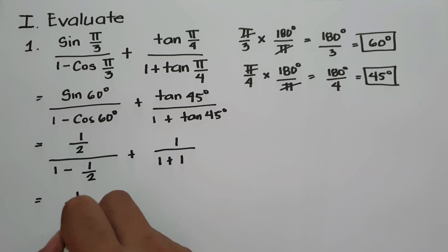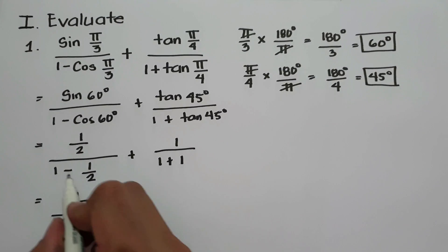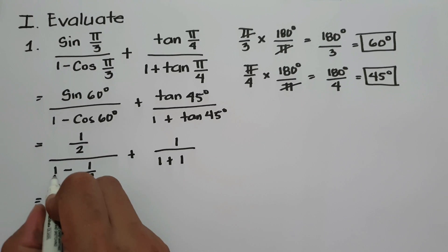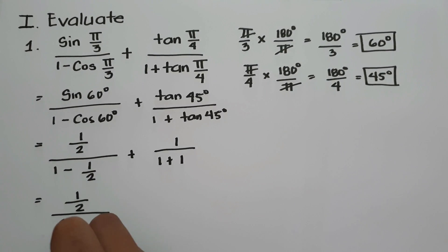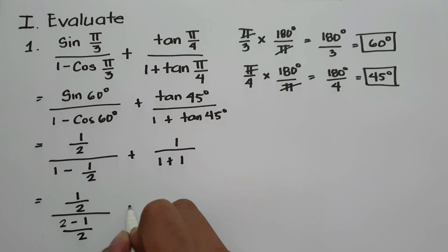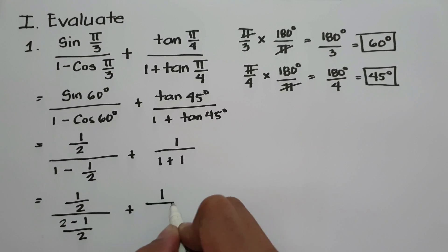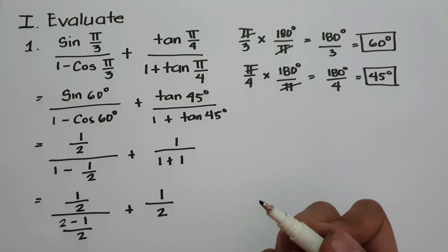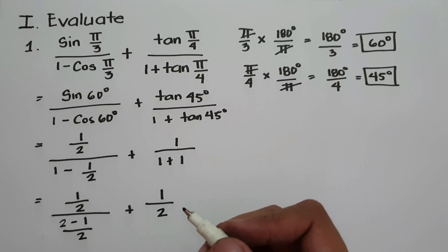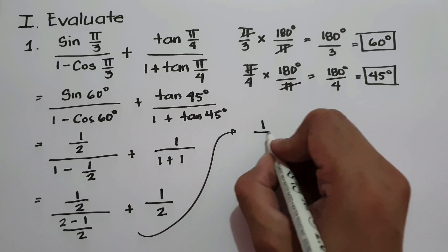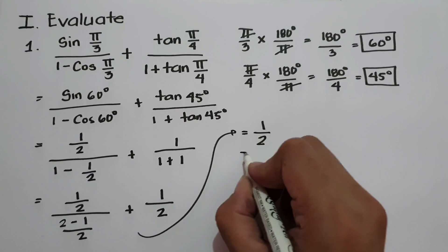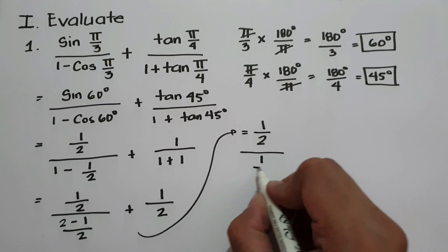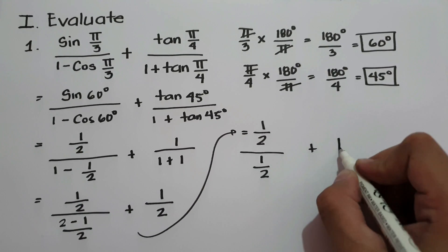So let us simplify. We write 1/2 divided by 1 minus 1/2. That is 2 multiplied by 1, which is 2, minus 1 over 2. Plus 1 over 1 plus 1, which is 2. Let us simplify: we have 1/2 over (2 minus 1), that is 1 over 2, plus 1/2.